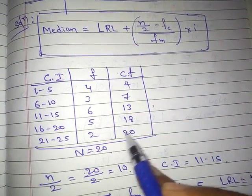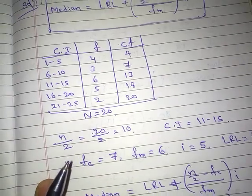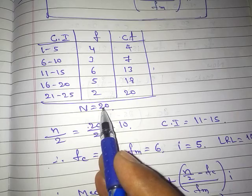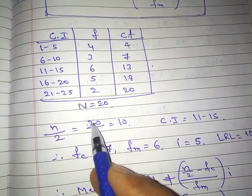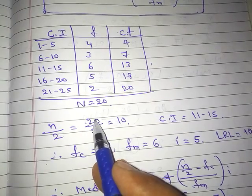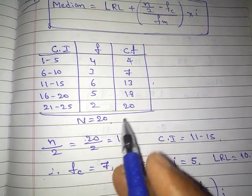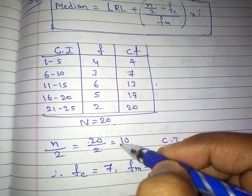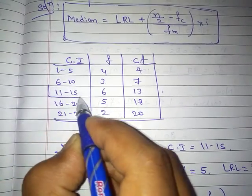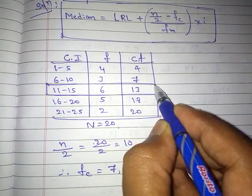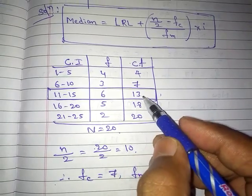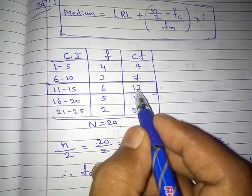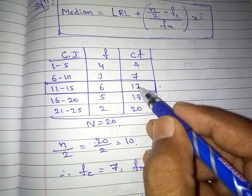After writing the cumulative frequency, we need to find n/2. Here n = 20, so n/2 = 20 / 2 = 10. The value 10 lies within the cumulative frequency of 13. This means the class interval corresponding to cumulative frequency 13, which is 11–15, is the median class — the class interval containing the median.